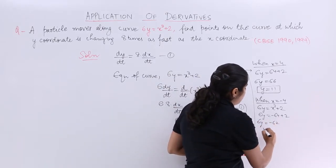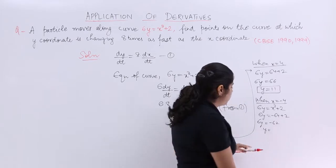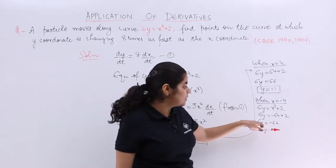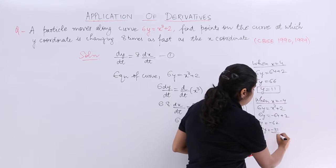It is minus 62, or you can say y equals what? We can cancel it in the 2s table. So it is minus 31 upon 3.